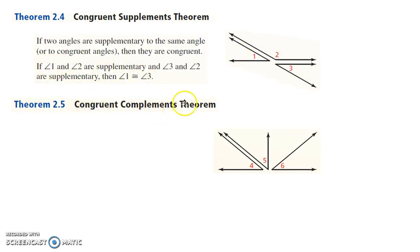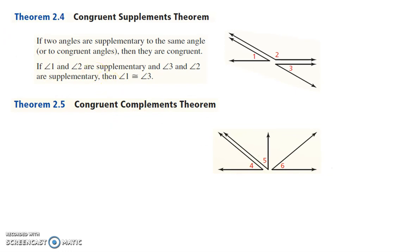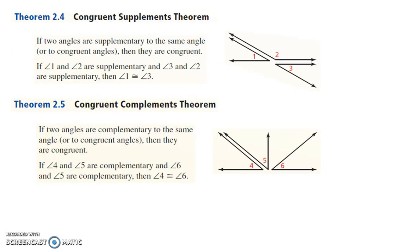The Congruent Complements Theorem: if two angles are complementary to the same angle — so angle 4 is complementary to angle 5, and angle 6 is complementary to angle 5 — then angles 4 and 6 are congruent. Make sure you don't confuse congruent and complementary. Complementary means it adds to 90 degrees; congruent means it has the same measure. So if two angles are complementary to the same angle, then they are congruent — they have the same measure.